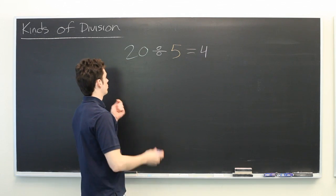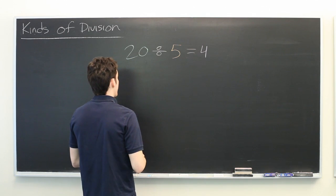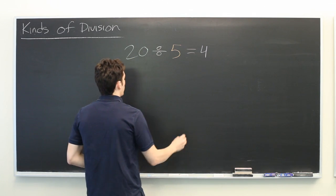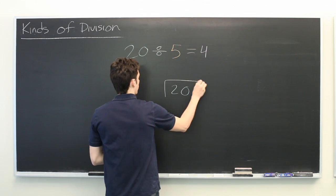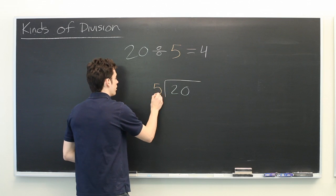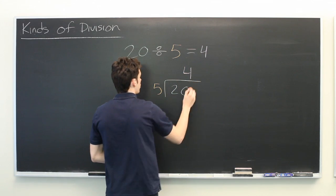But let's see some other different ways that the same problem can be represented. We can have long division. Twenty divided by five, in which case the answer is four.